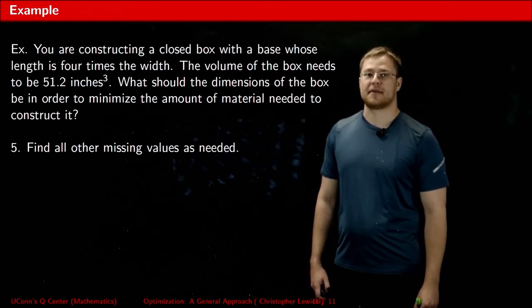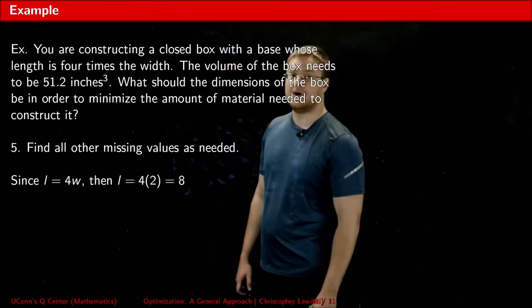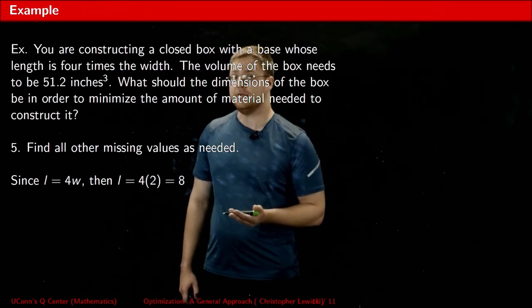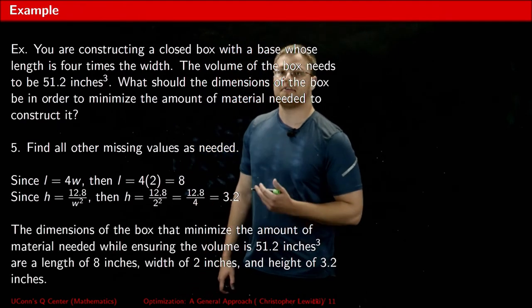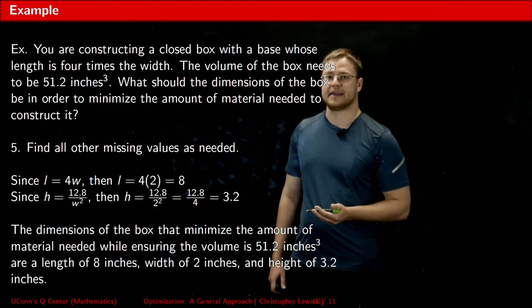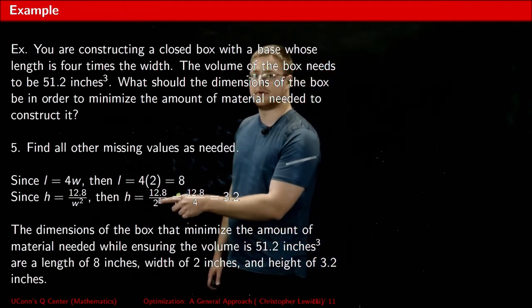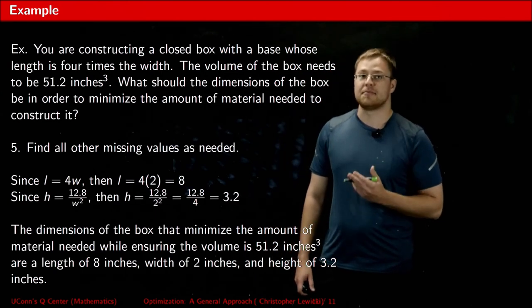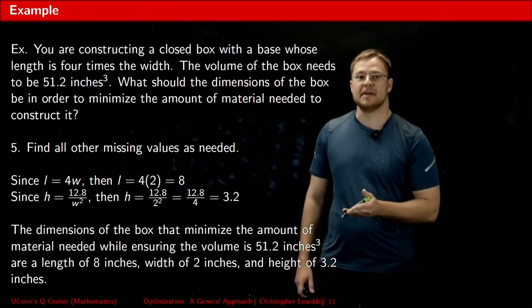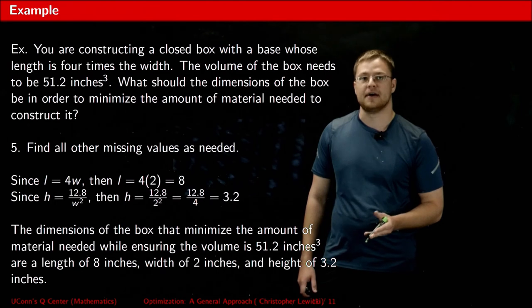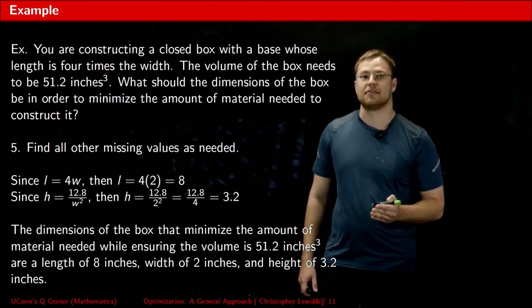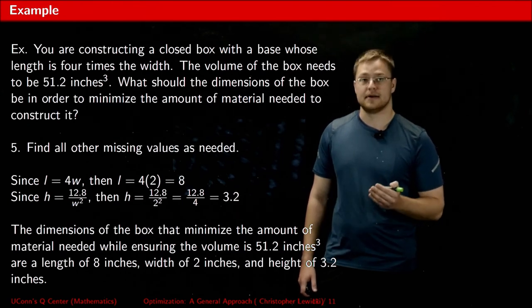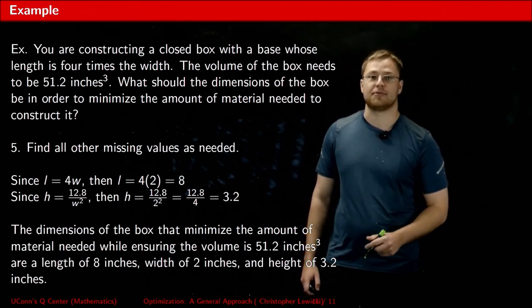Thankfully, we have our constraints to help us out with this. From constraint number one, we know that the length is four times the width. If the width is two, then the length is eight. Using constraint number two, we can solve for the height. After substituting in two for w into this expression, I get that the height is 3.2. So the dimensions of the box that are going to minimize its surface area while also making sure that its volume is 51.2 inches cubed are the length being eight, the width being two, and the height being 3.2.